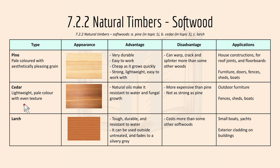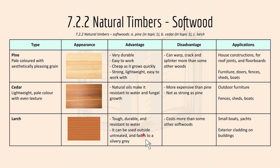Cedar is lightweight and pale colored with an even texture. Natural oils make it resistant to water and fungal growth. It's more expensive than pine and not as strong, and it's used in outdoor furniture, fences, sheds, and boats. Larch is tough, durable, and resistant to water. It can be used outside untreated and weathers to a silvery grey color. It costs more than some other softwoods and is used in small boats and exterior cladding on buildings.